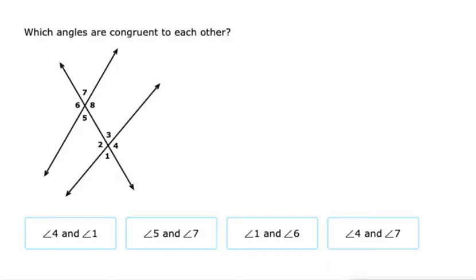So how about one and four? One and four? Nope. Those are supplementary. What about five and seven? Yep. Those are vertical angles. So they're congruent. What about one and six? One and six? Absolutely not. And what about four and seven? Absolutely not either. So there we go. We got four, five and seven.